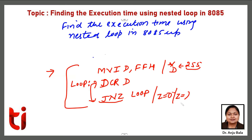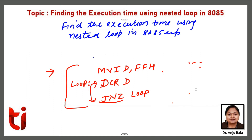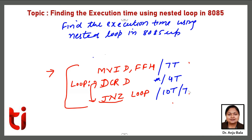In this case, firstly we need to find out how many T-states are required for each instruction. For MVI, 7 T-states are required. For DCR D, we have already discussed that is 4 T-states. For Jump If Not Zero, 10 T-states when it is inside the loop; when it exits out from the loop there are 7 T-states.